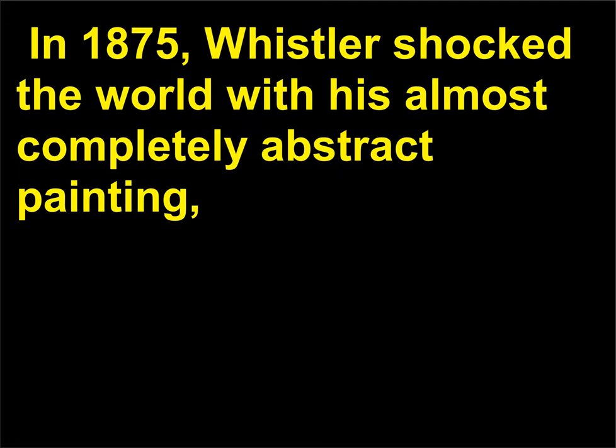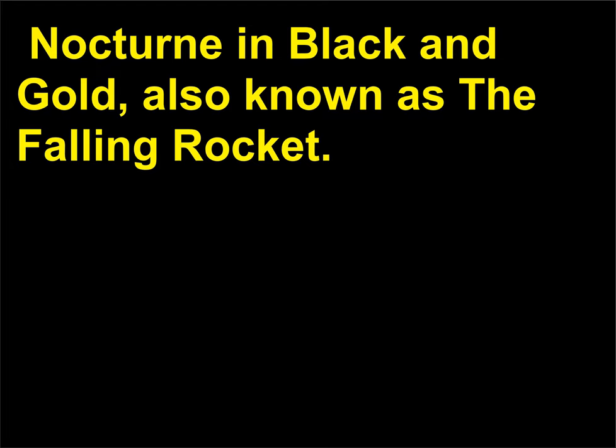In 1875, Whistler shocked the world with his almost completely abstract painting Nocturne in Black and Gold, also known as the Falling Rocket. Whistler was accused of having no clear subject for his work, and those who viewed it described it as looking unfinished. The painting personally enraged John Ruskin, Britain's premier art critic, who accused the artist of throwing paint in the public's face with such an abstract work.